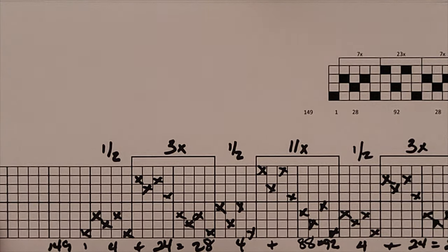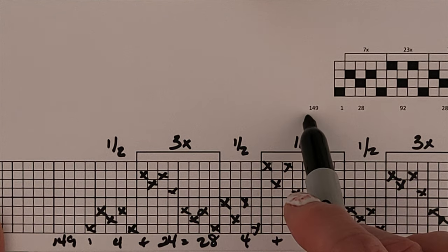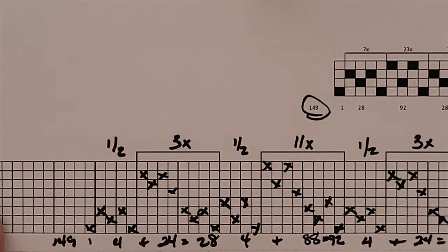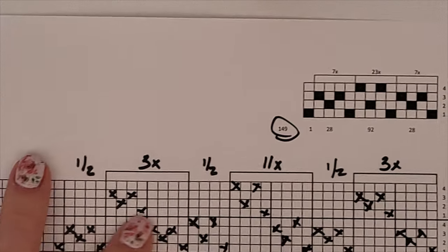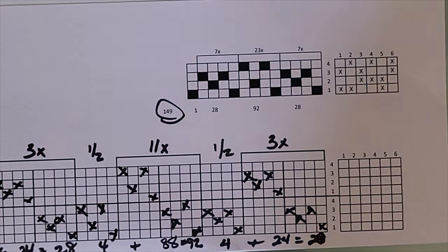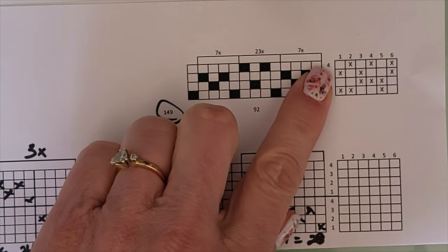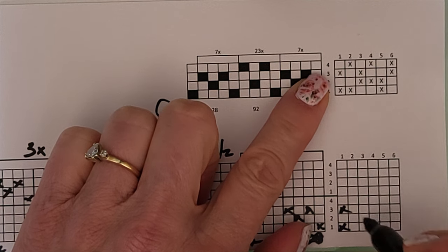So we have one plus 28 plus 92 plus 28 is 149. So because this number matches our original 149, we know that we have every thread accounted for. Now we need to do the tie-up. The tie-up is done the same way. We look at our original tie-up, which is one and three.